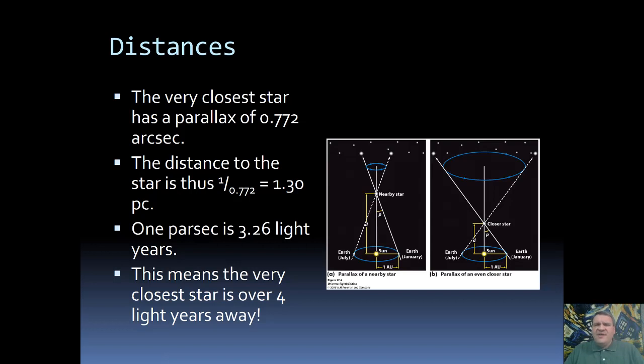We mentioned previously that the ancient Greeks believed that the earth was the center of the universe and that everything orbited around it. One of their arguments for why is that if the earth moved around the sun we should be able to see parallax. They actually understood this idea already. So the argument is that we don't see a parallax and therefore the earth must not be moving.